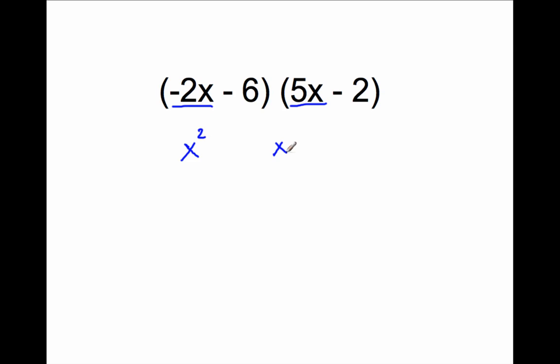And anything to the first power is just that number, because you just write it once as multiplication. And then x to the zeroth power is 1, so I'm just going to write the number there, because 1 times whatever number I put here will give me the answer.